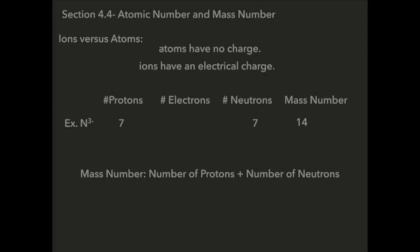So since I have 7 protons, I have 3 more electrons, that means I'm gonna have 10 electrons and that's it.